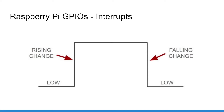Before we write any code, let's understand how interrupts work very basically. Here you have a signal that is, for example, low by default, and then can go to high and then come back to low. An interrupt basically is going to monitor this change of state.